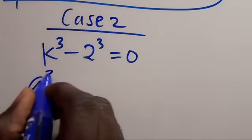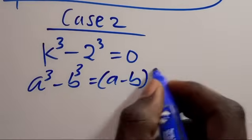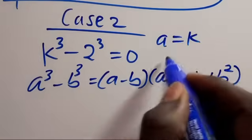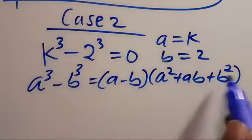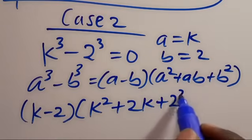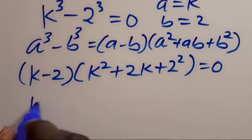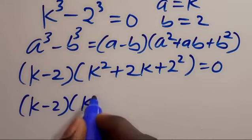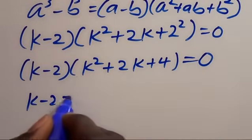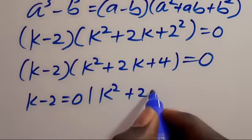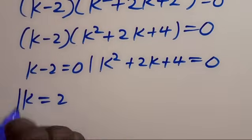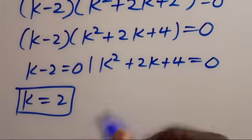Now for Case 2: recall that a³ − b³ = (a − b)(a² + ab + b²). With a = k and b = 2, substituting gives (k − 2)(k² + 2k + 4) = 0. From k − 2 = 0, we get k equals 2, which justifies our previous solution.